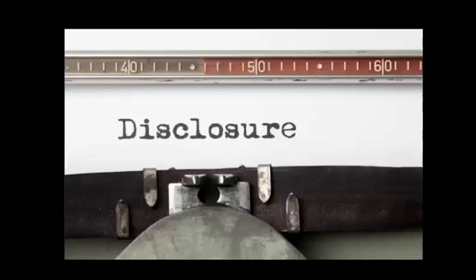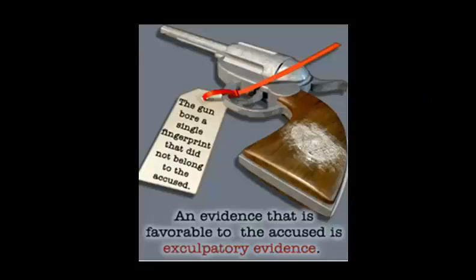Exculpatory evidence is evidence that would tend to justify or absolve the defendant — basically, evidence that tends to prove the defendant is not guilty of the crime they're being accused of. The defense gets this information by way of disclosure, meaning the prosecutor must actively give it to the defense. For example, in our picture we see a gun — let's say this is the murder weapon. If the fingerprint on it doesn't belong to the defendant, that is the type of evidence you'd have to turn over, because it tends to prove the defendant wasn't the one holding the gun.